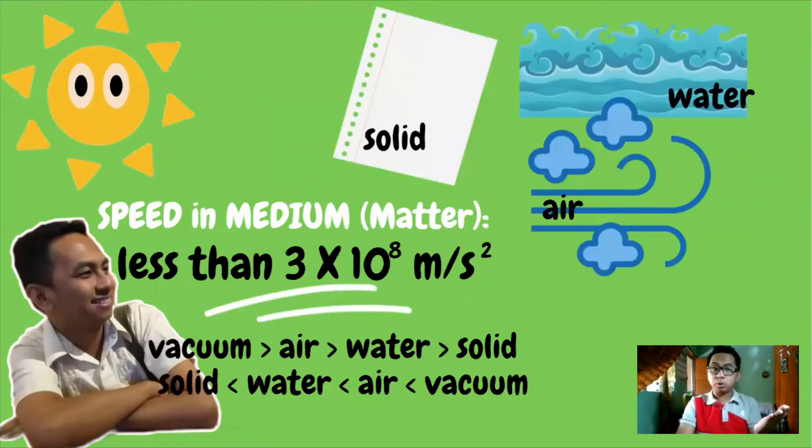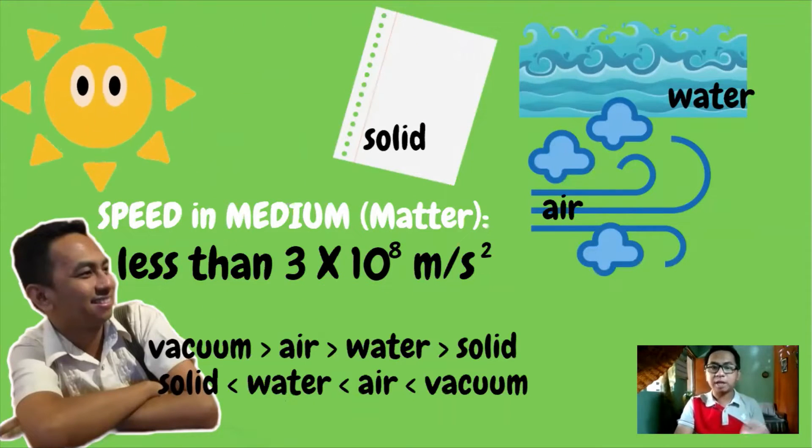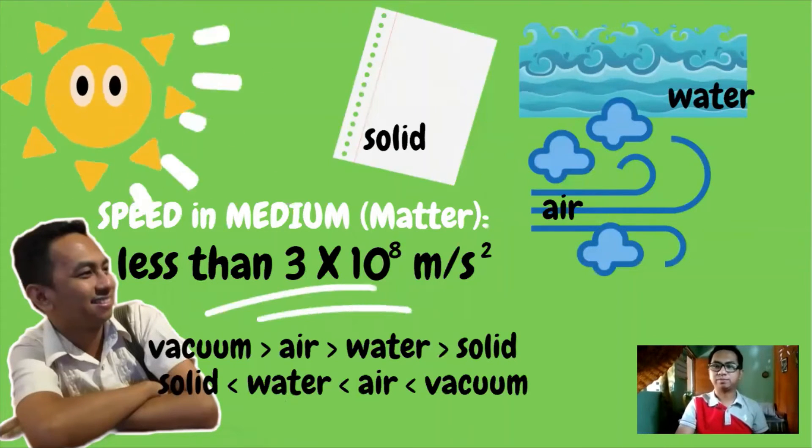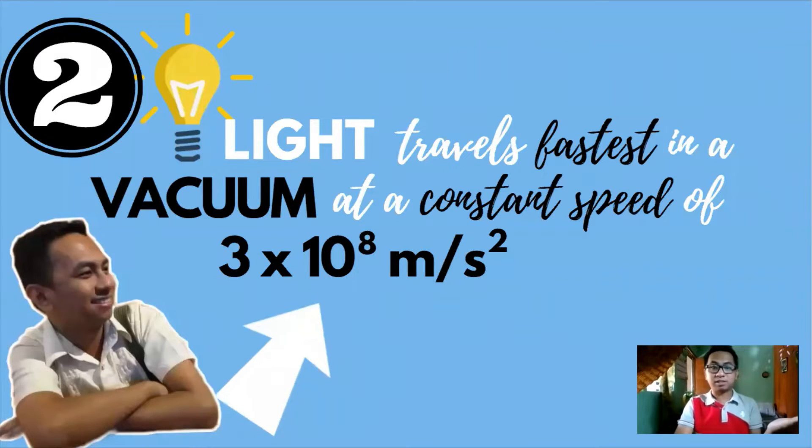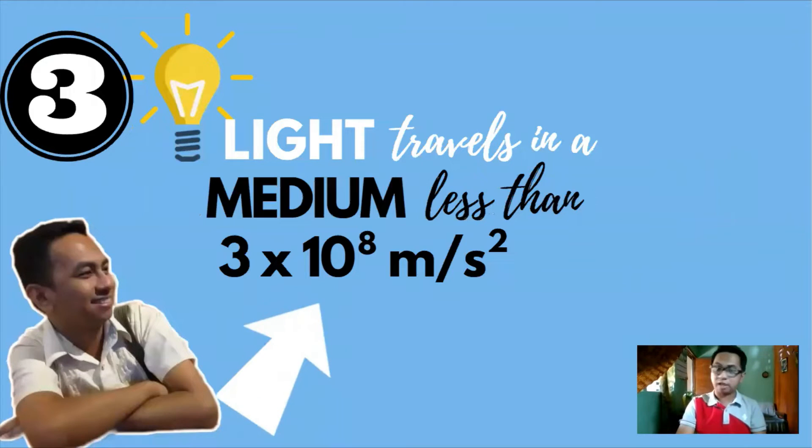In any material medium or objects, the speed of light is always less than 3 times 10 to the 8th power meters per second. It travels fastest in a vacuum and slowest in solid materials. For our second characteristic, light travels fastest in a vacuum with a constant speed of 3 times 10 to the 8th power meters per second. Light travels in a medium less than 3 times 10 to the 8th power meters per second.